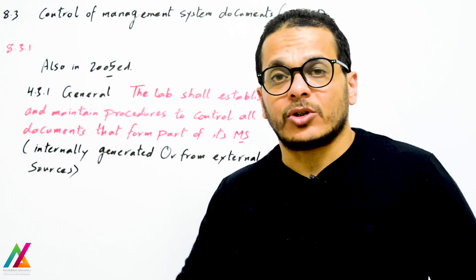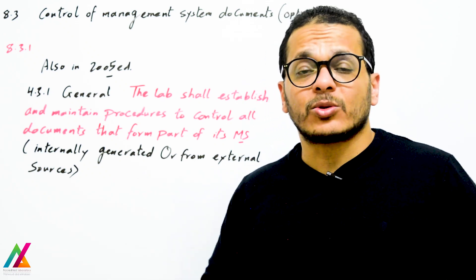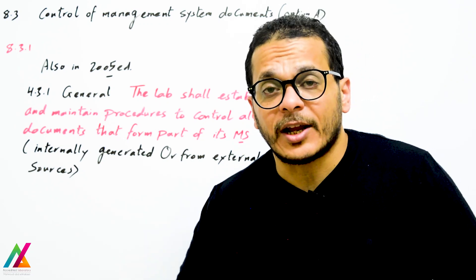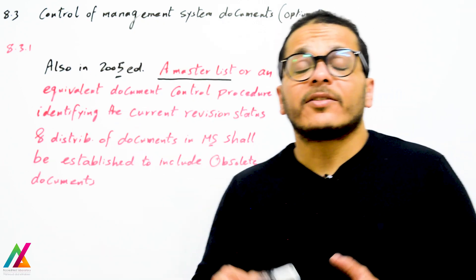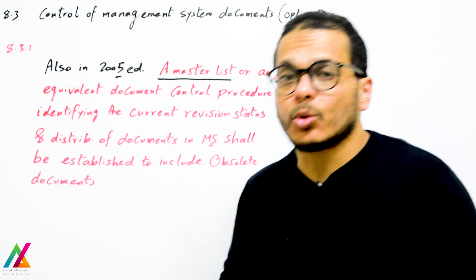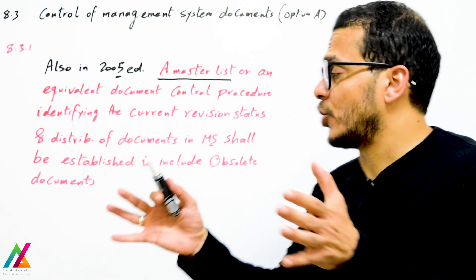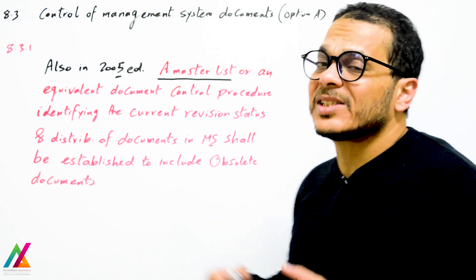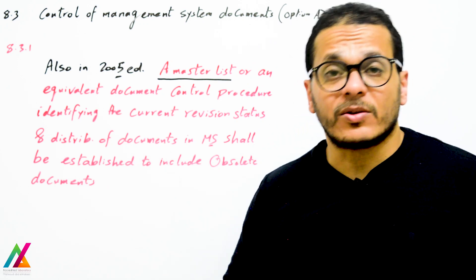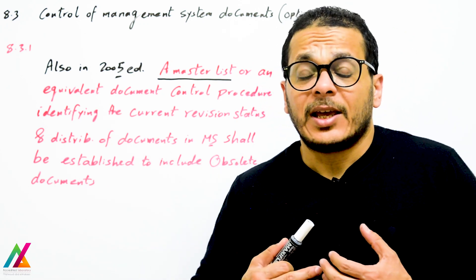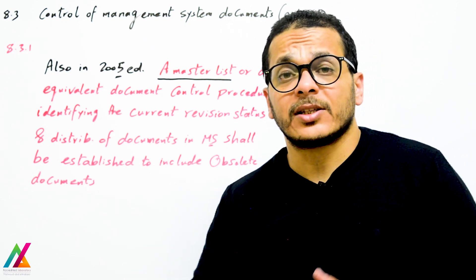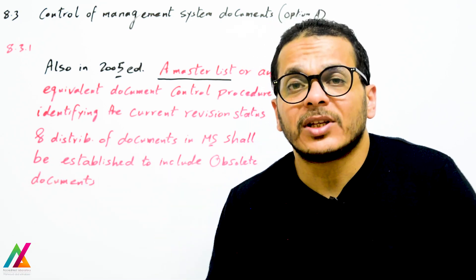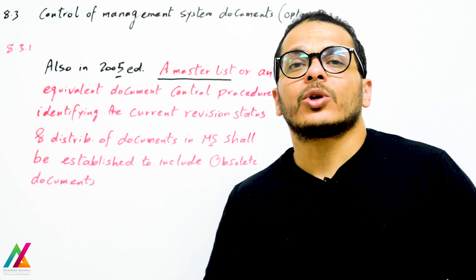If your lab was already accredited according to the 2005 edition, you have this procedure and can keep it. If you don't want to keep it or prepare a new one, that's no problem. Also in the 2005 edition, a master list or equivalent document control procedure identifying current revision status and distribution shall be established. Master list was required in 2005 but is not mentioned in 2017, however it remains very useful to organize all documents.